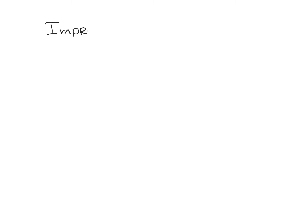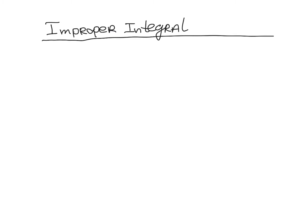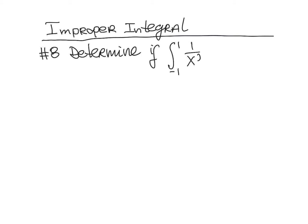In this video we're going to look at another example of how to determine when an improper integral converges or diverges. The example is to determine if the integral from minus 1 to 1 of 1 over x squared converges or diverges.